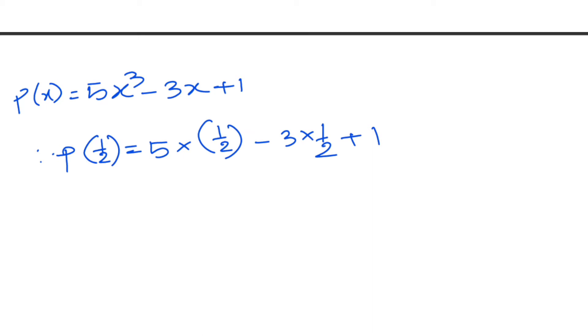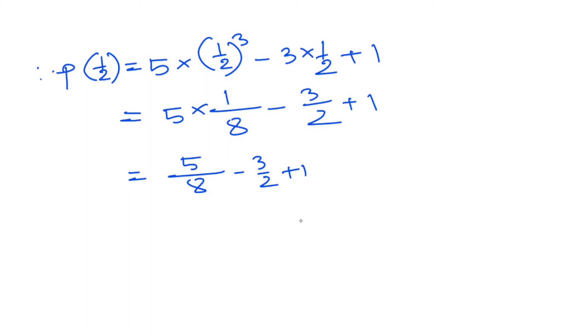For the cube calculation: 5 times 1/8 equals 5/8, minus 3/2 plus 1. Now we calculate: 5 by 8 minus 3 by 2 plus 1.